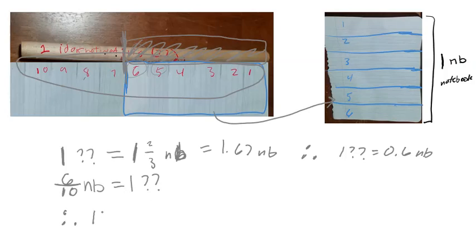So therefore, 1 question mark, question mark equals, well, 6 tenths is actually 0.6 notebooks. I didn't have to get a calculator out. I think this way is a little bit easier. Also, it helps you kind of see what you're dealing with and know that you're dealing with a smaller piece. So that's kind of important.